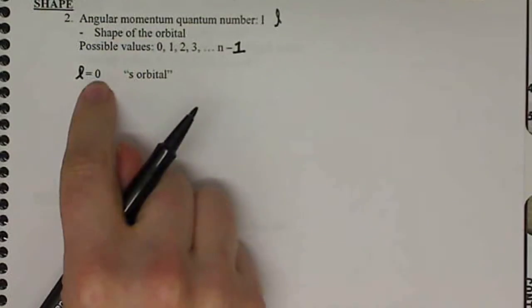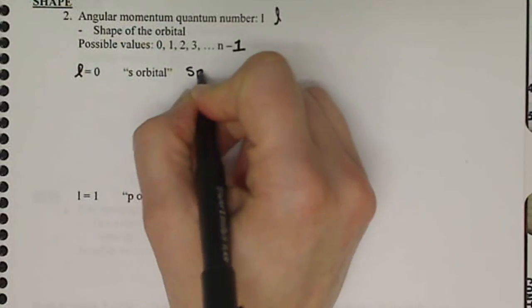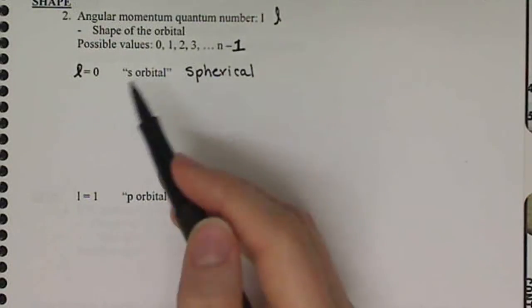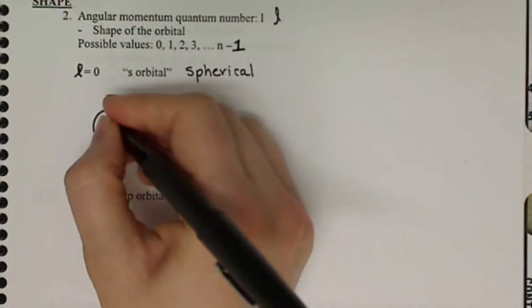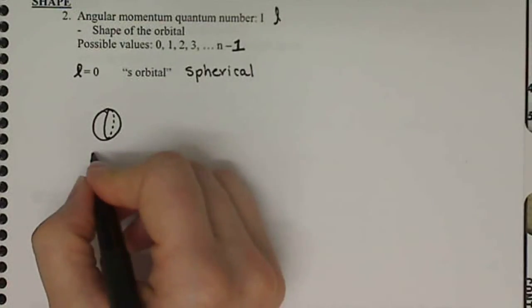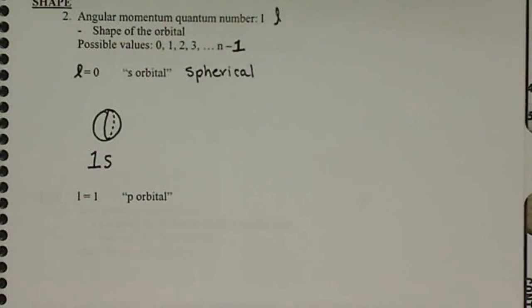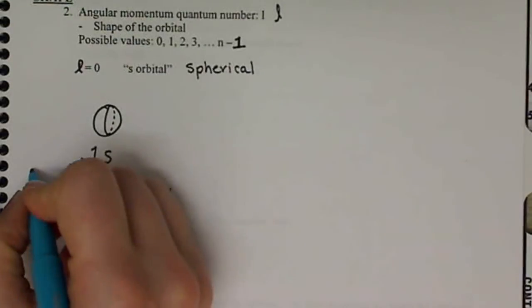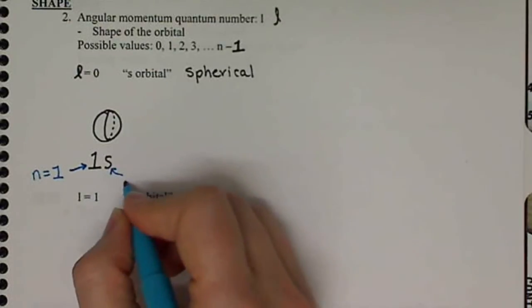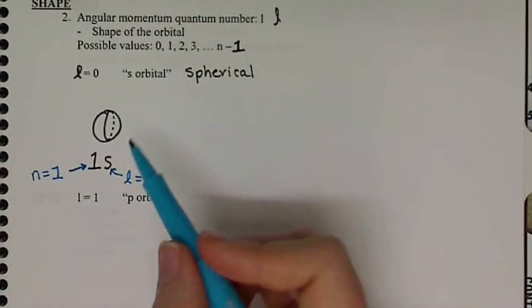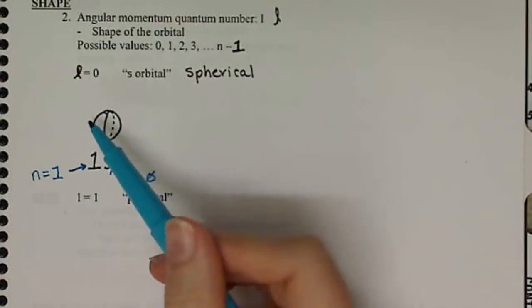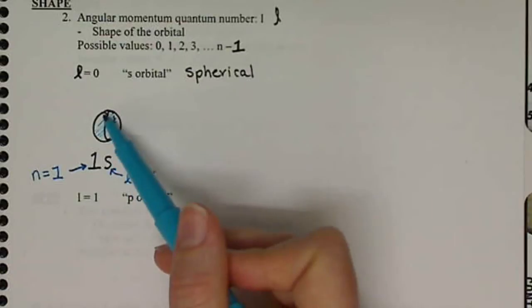So when l equals 0, this is called the s orbital, and it is spherical in shape. The size of the orbital depends on the n value. So if we have a sphere here, we would call this the 1s orbital. This 1 out in front, that represents the quantum number n, so that means that n is equal to 1, and the s here is representing that the l value equals 0. And what this shape means is that our electron, if it's in this orbital, is most likely going to be found somewhere in this sphere.